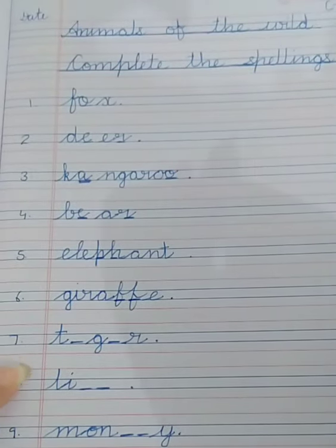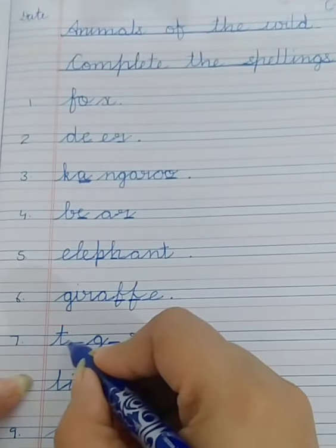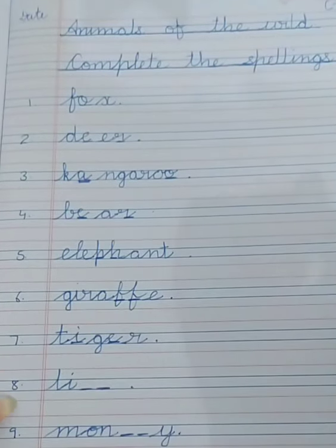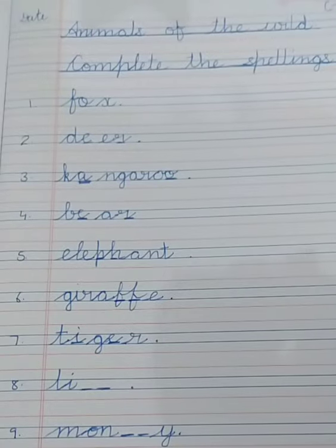Number seven, I think this is tiger, T-I-G-E-R, tiger. This is lion. Number eight is lion, L-I-O-N, that becomes lion.